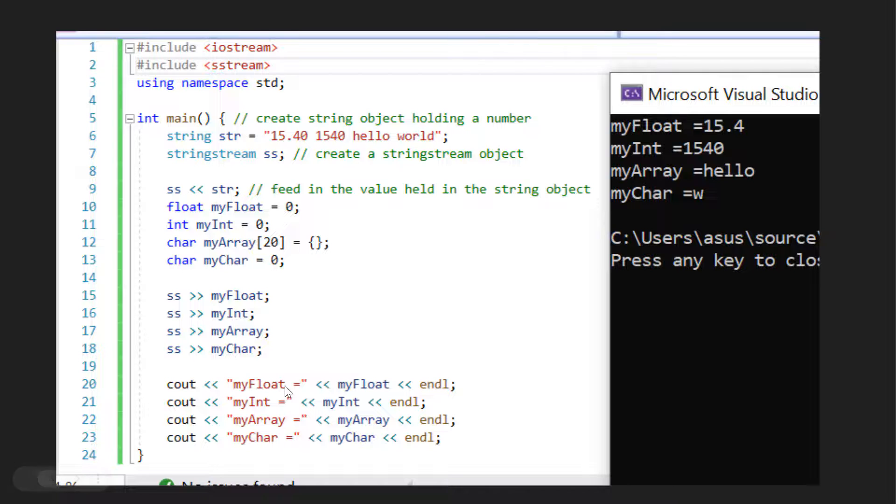And then what's happening here is that I'm outputting the string stream over here. As you can see for line number 20, 21, 22 and line number 23.